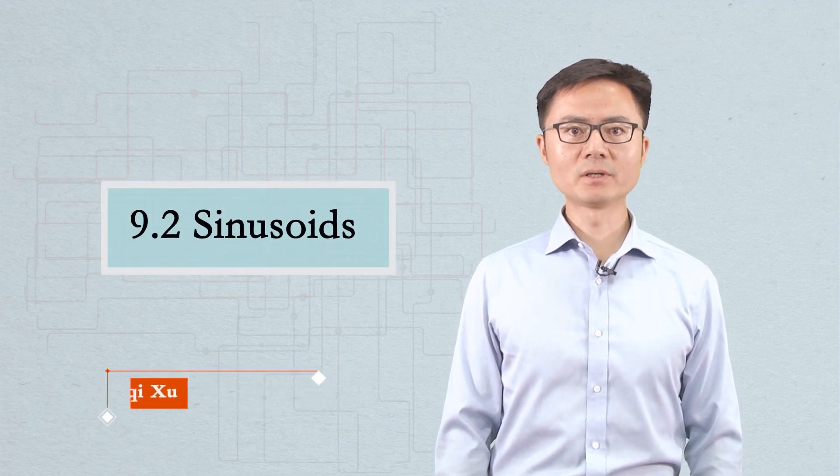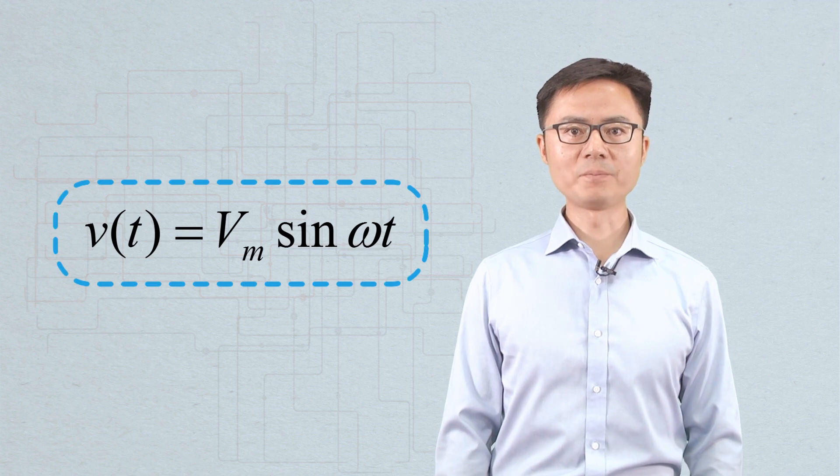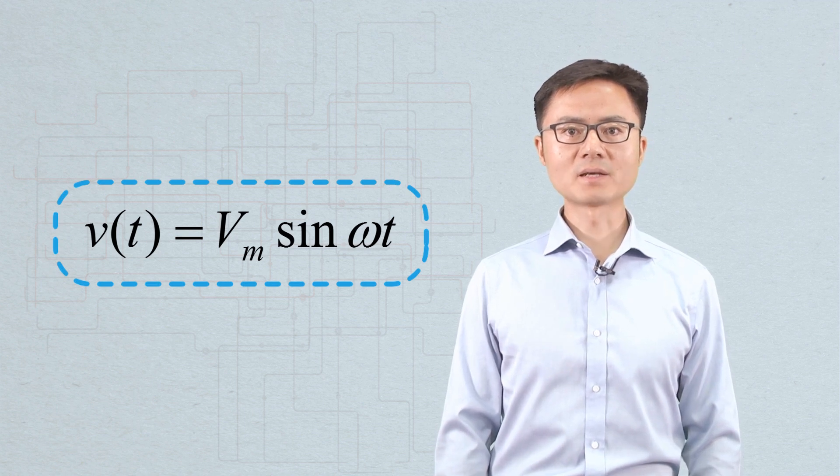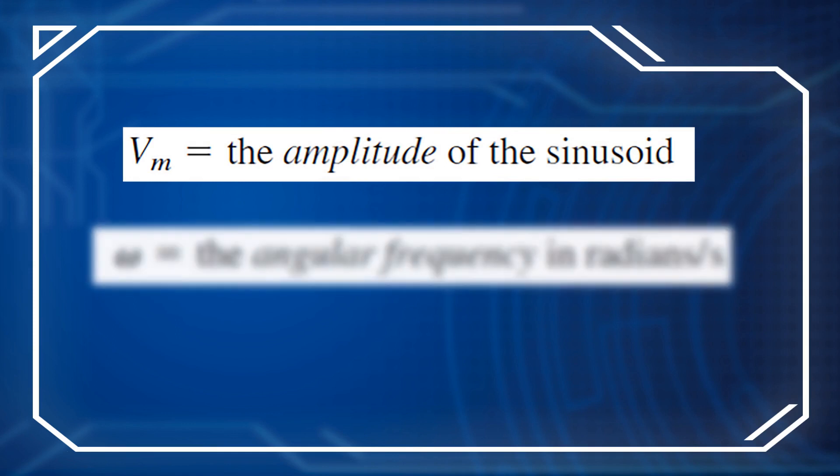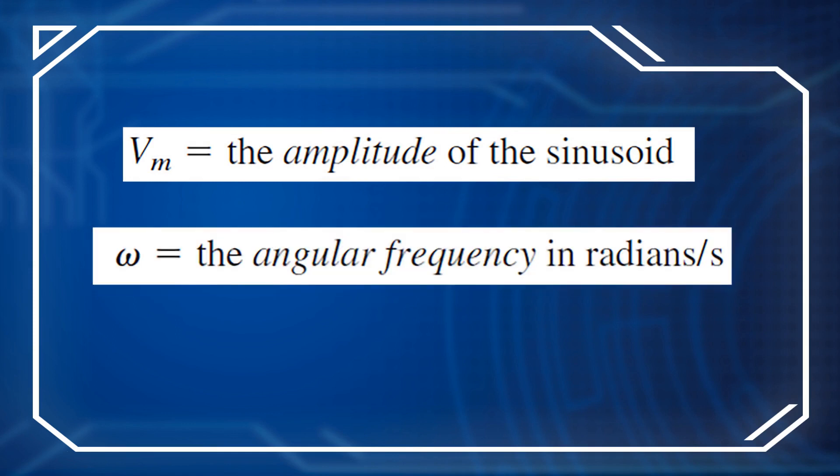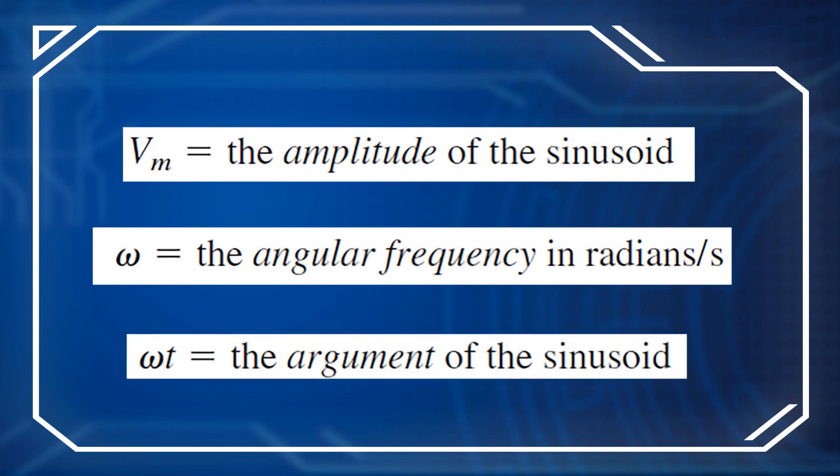A general expression for the sinusoid is v(t) equals Vm multiplied by sin(ωt), where Vm is the amplitude of the sinusoid, ω equals the angular frequency in radians per second, and ωt is the argument of the sinusoid.